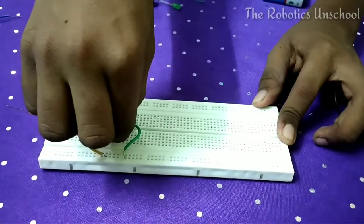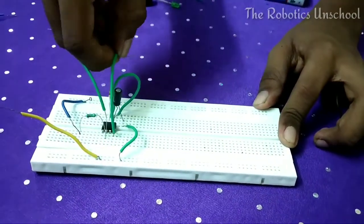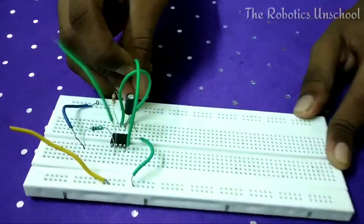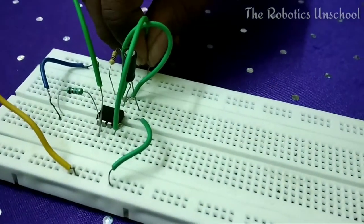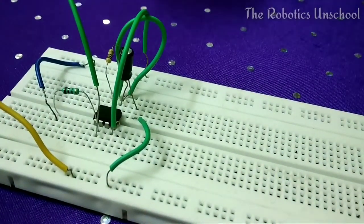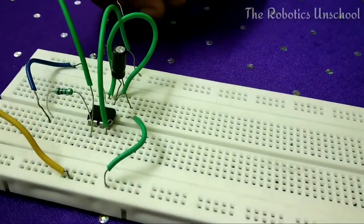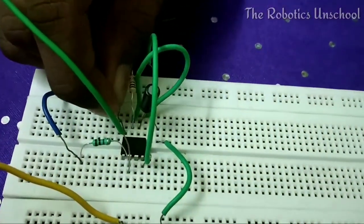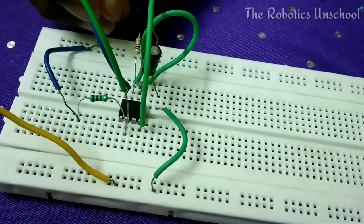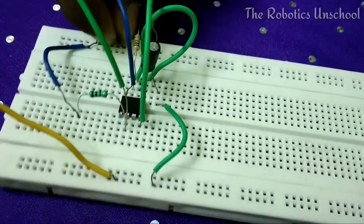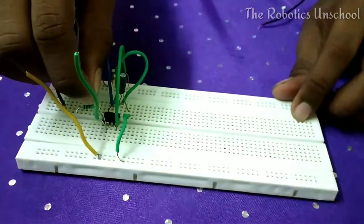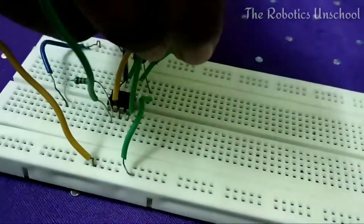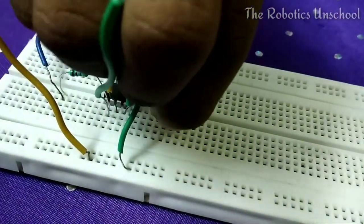From the fourth pin and eighth pin, we have to connect to the positive terminal. From the third pin, we have to connect to the positive terminal of the buzzer.